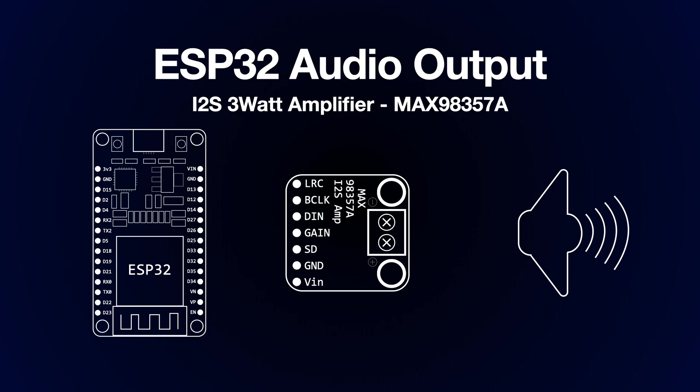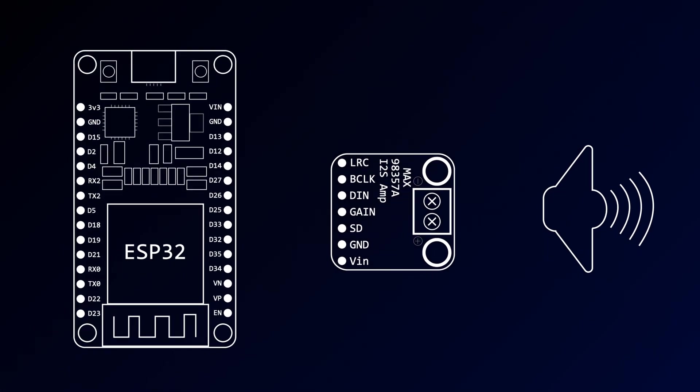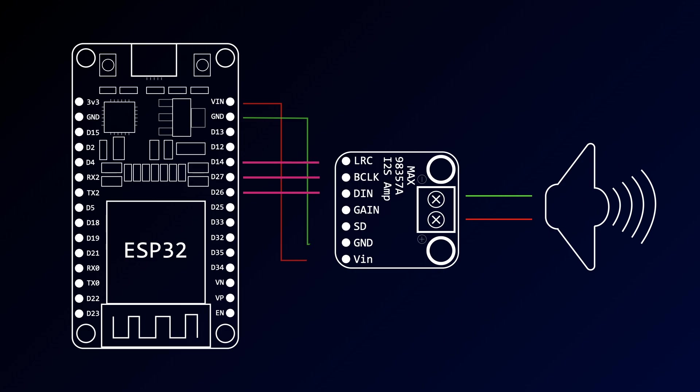I'm going to be using the MAX98357A breakout board from Adafruit. This is a Class D amplifier with an I2S interface.